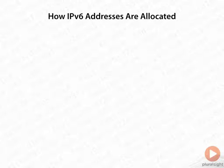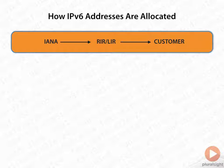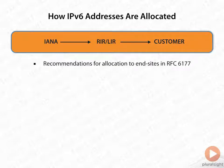So those are some addresses within IPv6 that are already allocated. The way they're allocated is from IANA to a regional internet registry or a local internet registry, and then from there to a customer. As we saw with IPv4, where some allocation was direct from IANA to an organization, that's no longer the case with IPv6 — it's much more hierarchical and a little more strict. The recommendations for allocations can be found in RFC 6177.